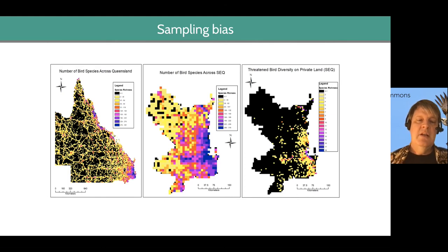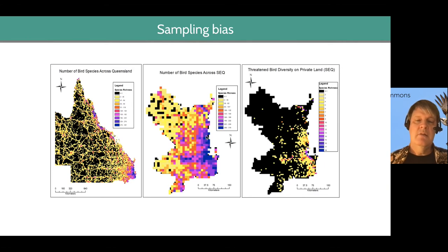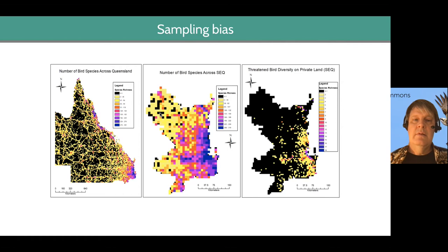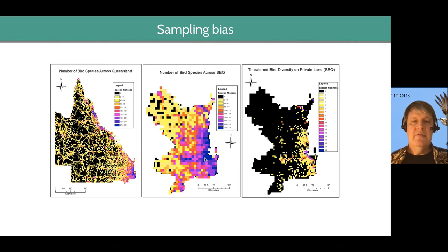If we zoom in on southeast Queensland, we can see most of the surveys have been done near the cities of Brisbane, Gold Coast, and Sunshine Coast. There are a few places in southeast Queensland where you could go and be a pioneer and do a survey where nobody's ever done one before. But if you want to do a bird survey close to Brisbane, there are lots of bird surveys that have been done there.